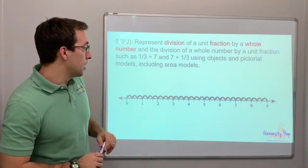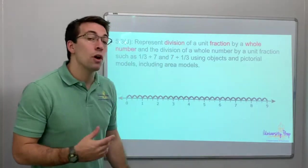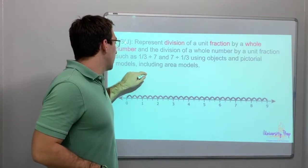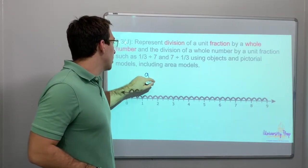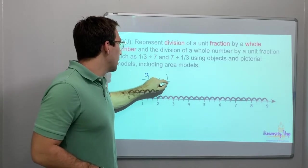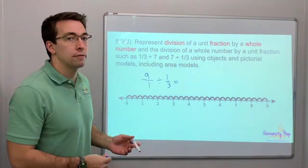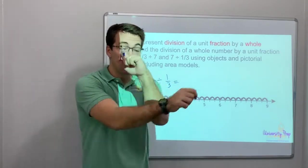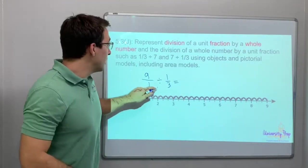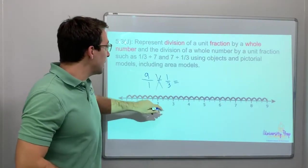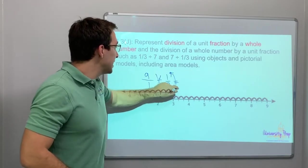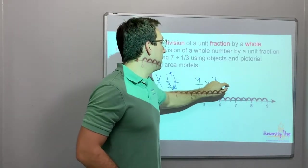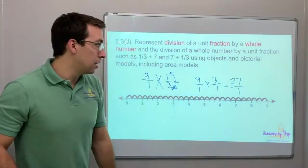But here, check this out. This is 9 divided by 1/3. Here's the dance: 9/1 divided by 1/3. How do you do division of a fraction? Multiply and flip. You change it to a multiplication sign and then flip the second fraction. So that equals 9/1 times 3/1, which equals 27/1, equals 27.